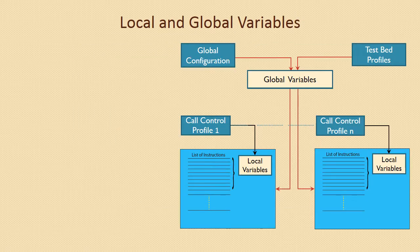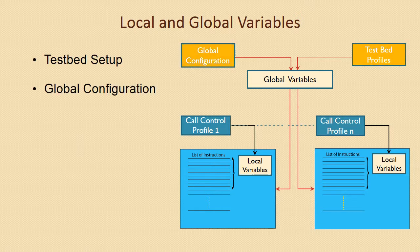Maps consists of three main profile configurations: testbed setup profiles, global configuration profiles, and call control profiles. The variables defined to retrieve values from these profiles are broadly classified into global variables and local variables.